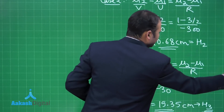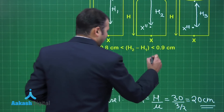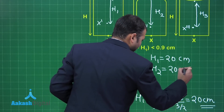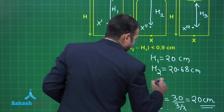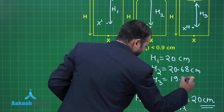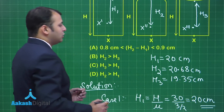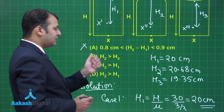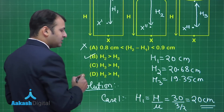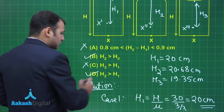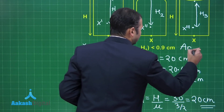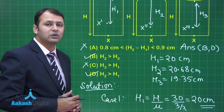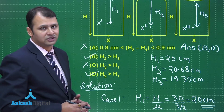Now let's look at the options. We have h1 = 20 cm, h2 = 20.68 cm, and h3 = 19.35 cm. The difference between h2 and h1 is only 0.68 cm, so option A is wrong. h2 > h3 — yes, that satisfies the condition. h3 > h1 — no, that's wrong. So the correct answers are options B and D. This question, due to its lengthy calculations, falls under the moderate section.